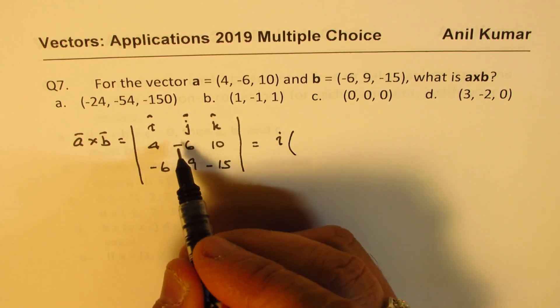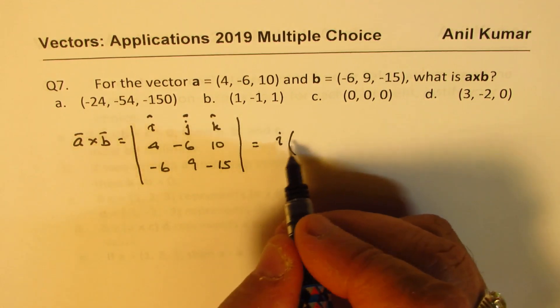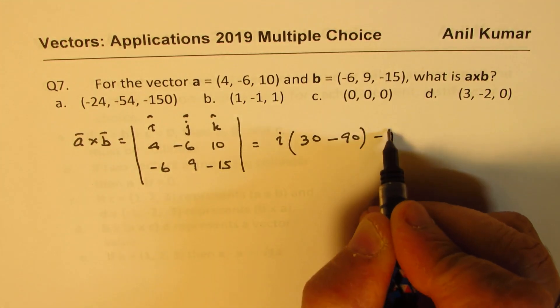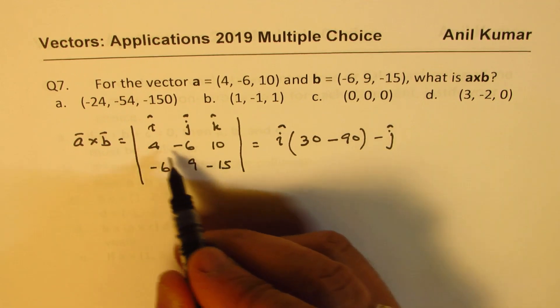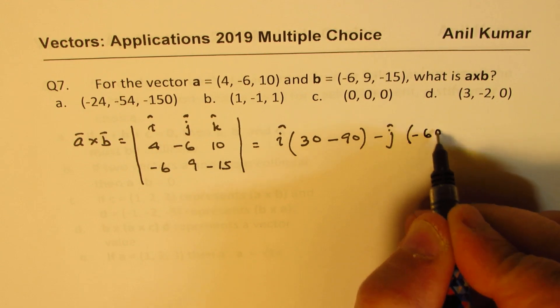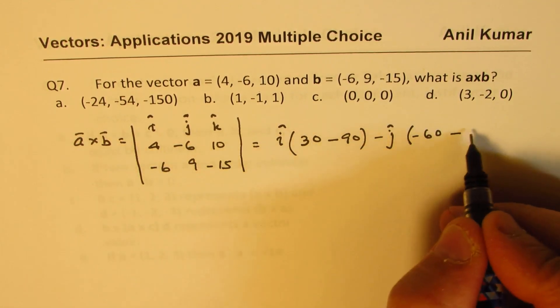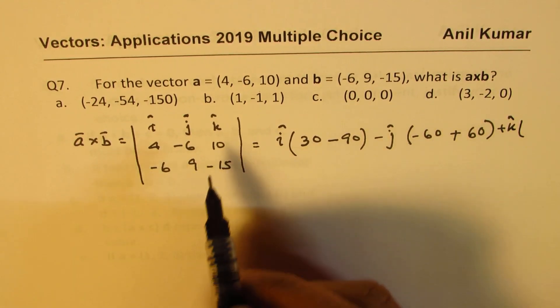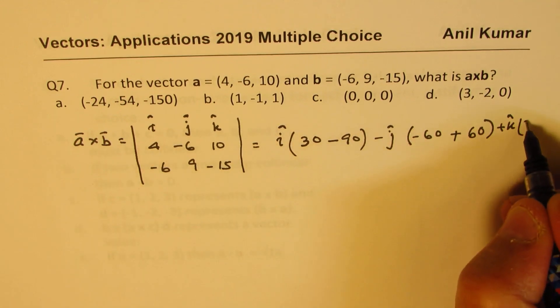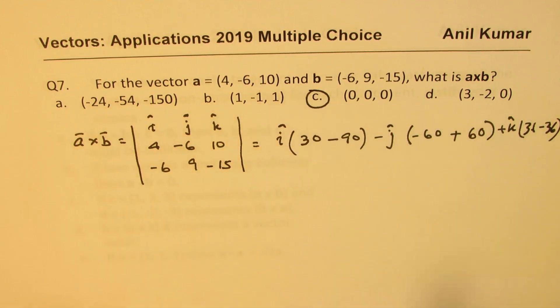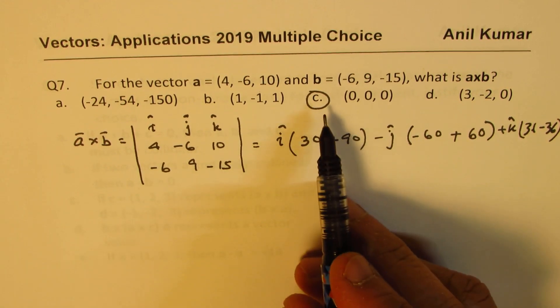So we get I, that gives you 90 minus 90, so that is 0, minus J. So 4 times 15, 60, with a negative sign, and that gives you negative of this, which is again 60 with a positive sign now, plus K, which is 4 times 9 minus 36 minus 36. So that is (0, 0, 0). That is your vector.